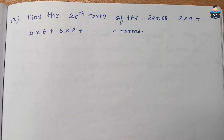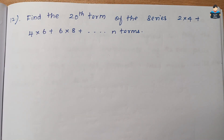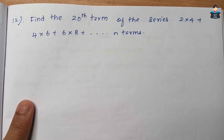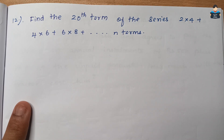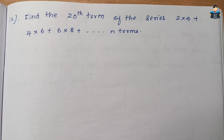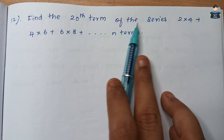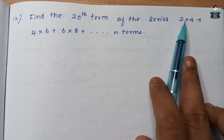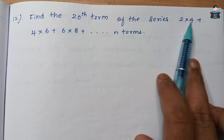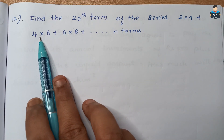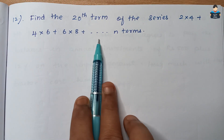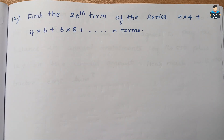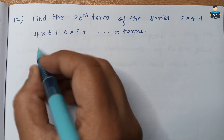Hello everyone, welcome to our channel. In this video we look at Class 11 NCERT, new edition book Chapter 8, Sequence and Series, Miscellaneous Exercise, Question number 12: Find the 20th term of the series 2×4 + 4×6 + 6×8 + ... up to n terms.